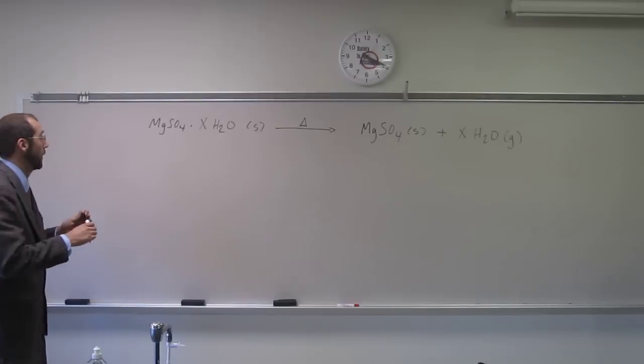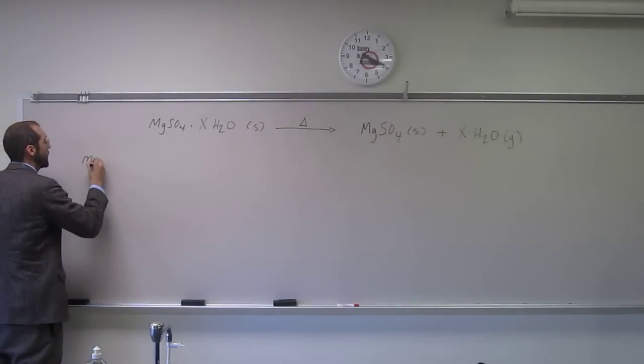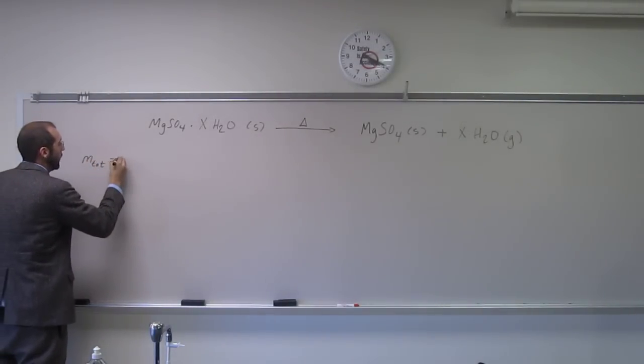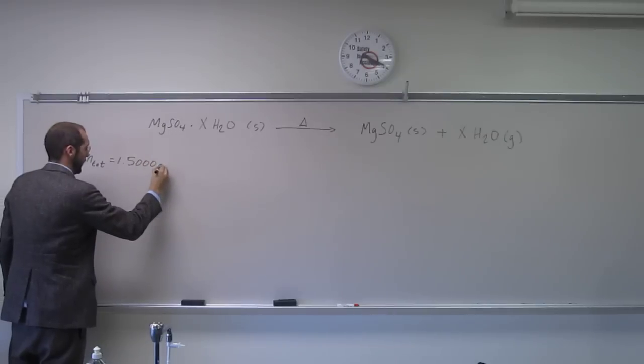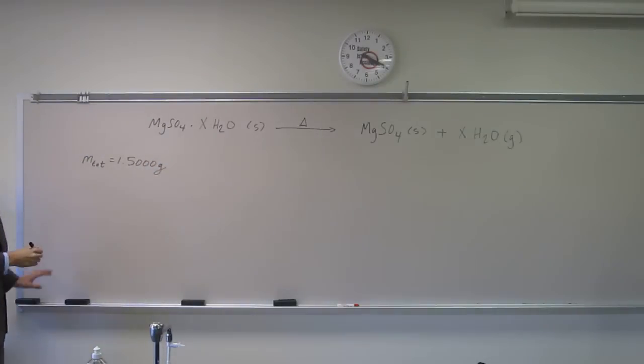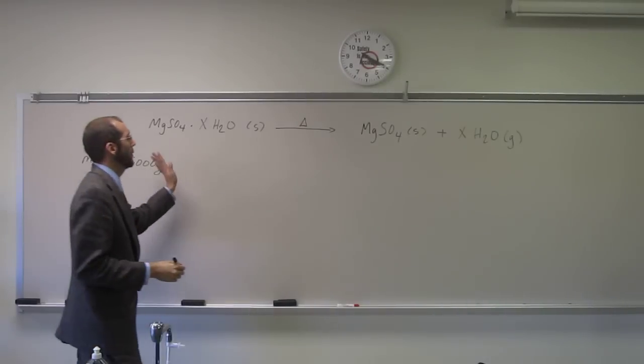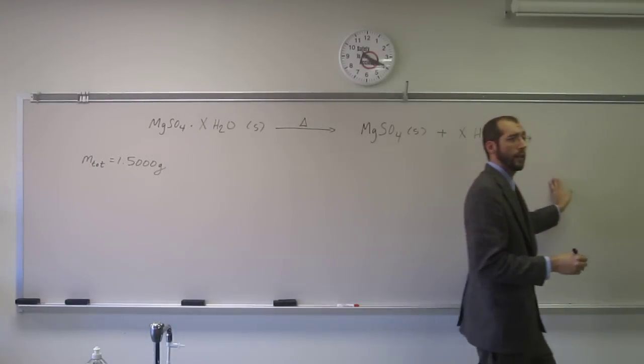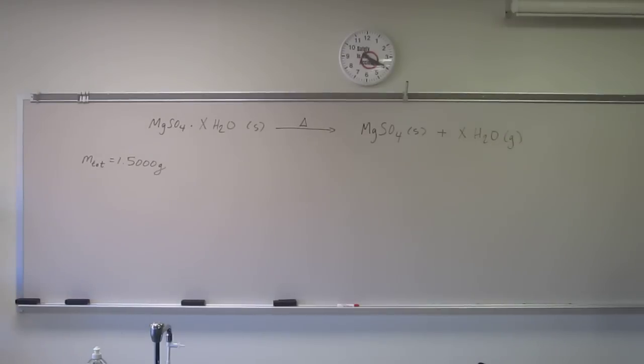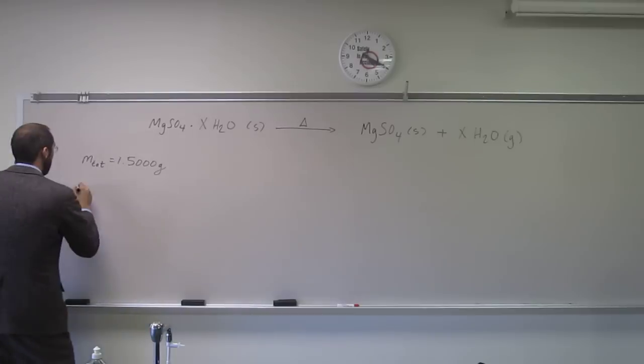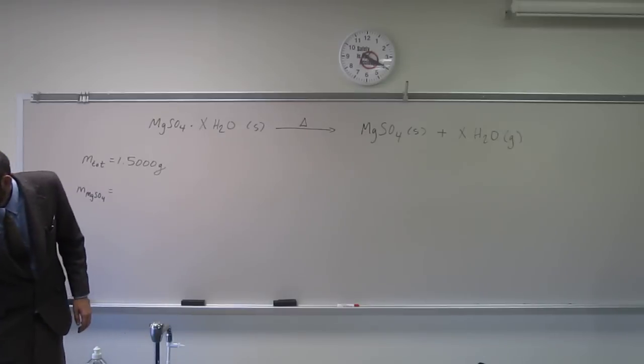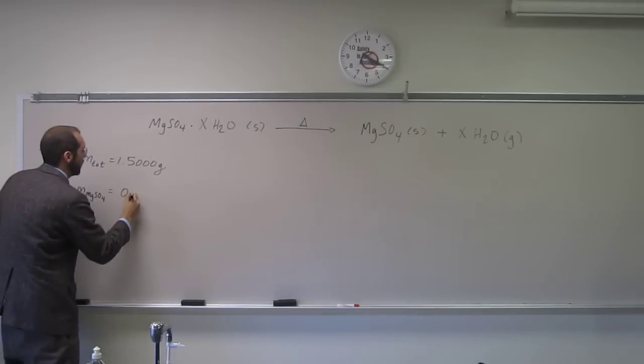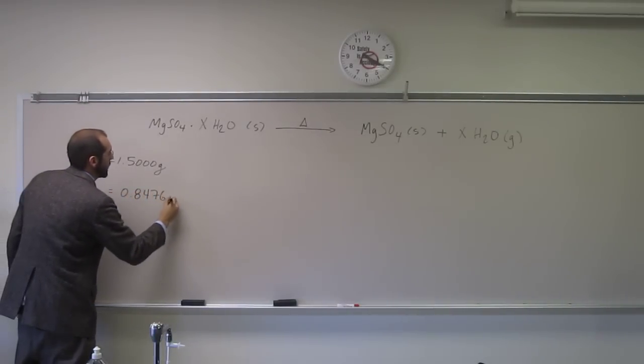So let's write down what the problem gives us. It says the mass total and the mass of the residue. So what is the residue in this equation? What would be left? The magnesium sulfate, right? Okay, so the mass of the magnesium sulfate we said was 0.8476 grams.